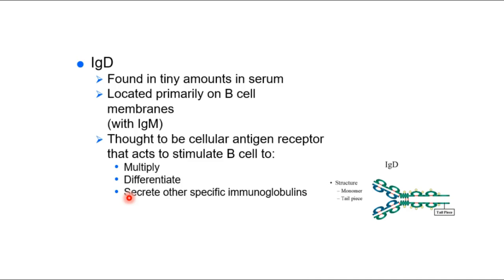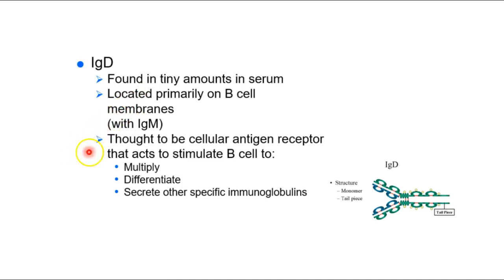IgD is a single monomer. You'll find it in the serum of your blood and also on B cell membranes, along with IgM. IgD helps stimulate B cells — remember, when B cells are activated, they undergo mitosis and become or create plasma cells. IgD plays a role in that activation process.